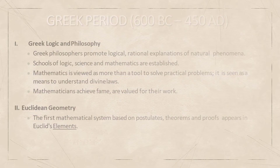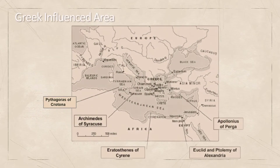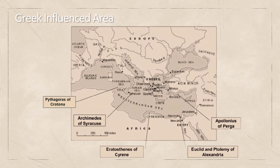This map shows the Greek influence area. Starting from the left: Pythagoras of Crotona, Archimedes of Syracuse, Eratosthenes of Cyrene, Euclid and Ptolemy of Alexandria, and Apollonius of Perga.